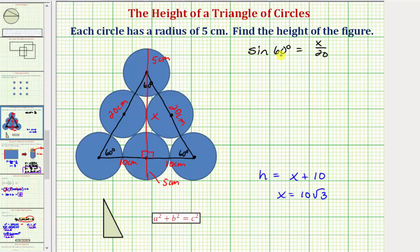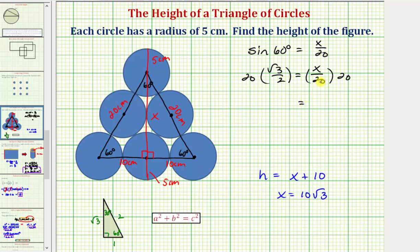To determine the sine of sixty degrees, let's use a 30-60-90 reference triangle, where for any 30-60-90 right triangle the sides are always multiples of one, two, and square root of three. So the sine of sixty degrees equals the opposite side over the hypotenuse, which is square root of three divided by two. So we have square root of three over two equals x over twenty. Multiplying both sides by twenty, the twenty on the right simplifies, and on the left the two simplifies to give us ten — so x equals ten square root of three.